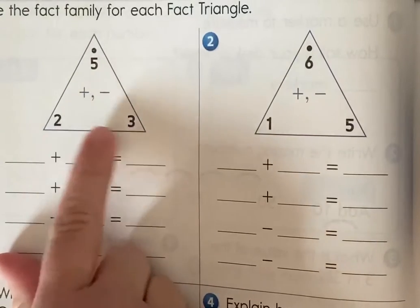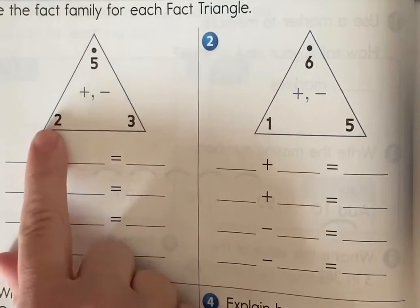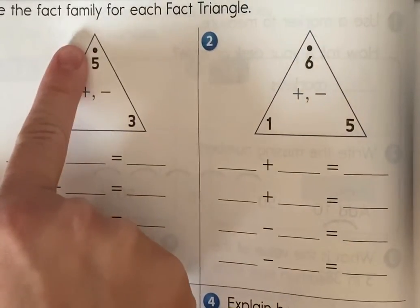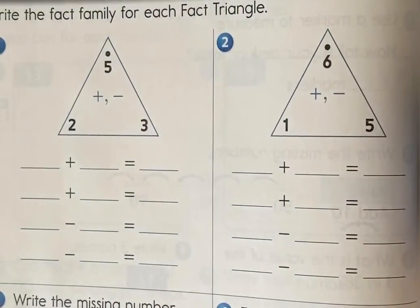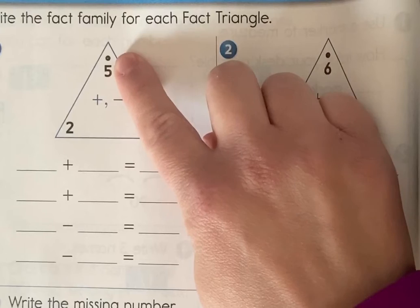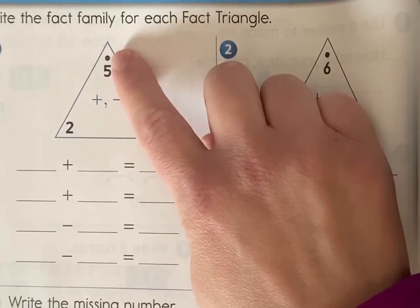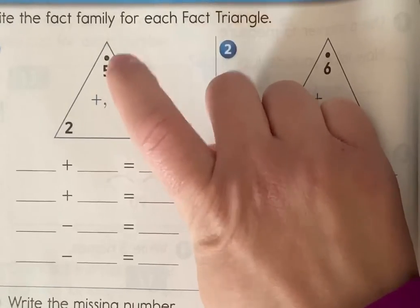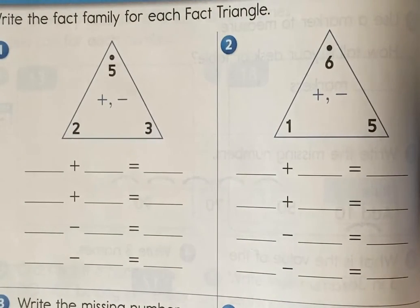Down here at the bottom you have two numbers and these two numbers add together to make the sum at the top of the triangle. The reason there's a dot there at the top of the triangle is because that is showing you that that's the top and that the biggest number in the fact family goes there.